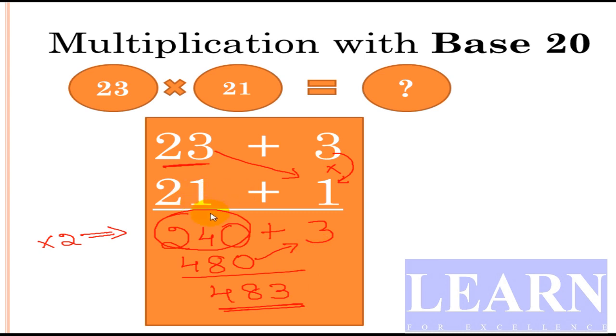It is exactly similar to the previous one, but since the base is 20, we need to multiply this added number by 2. So after multiplying the cross addition number by 2, we need to add the final result. I'll take one more example here.